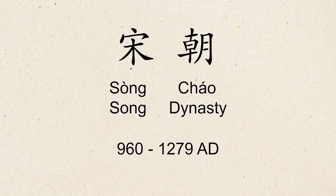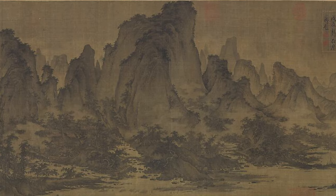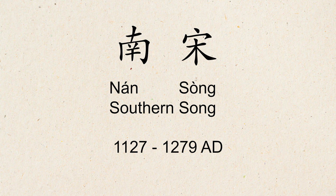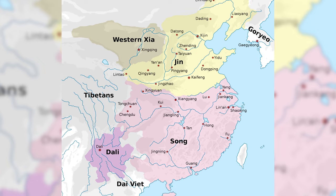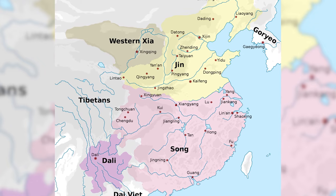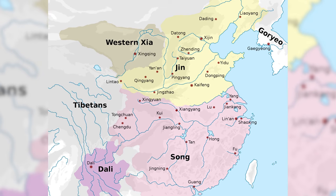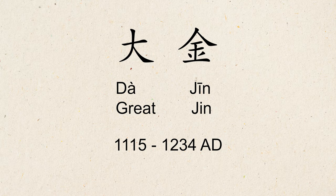That was until the Song dynasty, 宋朝, a time of military weakness, when Chinese forces were forced to retreat to the south side of the Great Wall. In the later Southern Song, 南宋, they retreated further to the south of the Huai River. This meant the entirety of the wall system built by previous dynasties was now inside the territory of the Jin dynasty, or the Great Jin, 大金, a dynasty set up in the north by the Jurchen people. And as you've probably gathered by now, the effectiveness of the Great Wall at keeping out invaders is highly debatable.